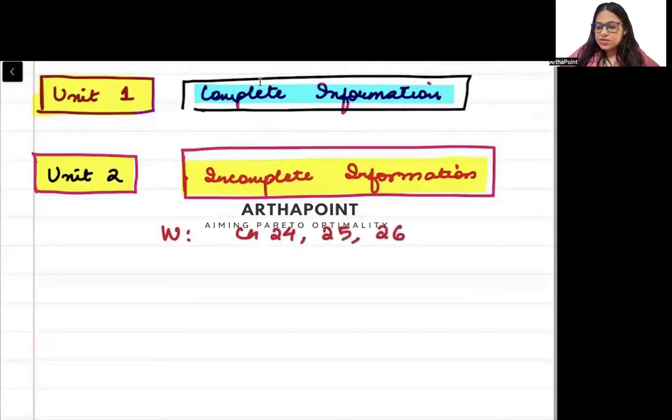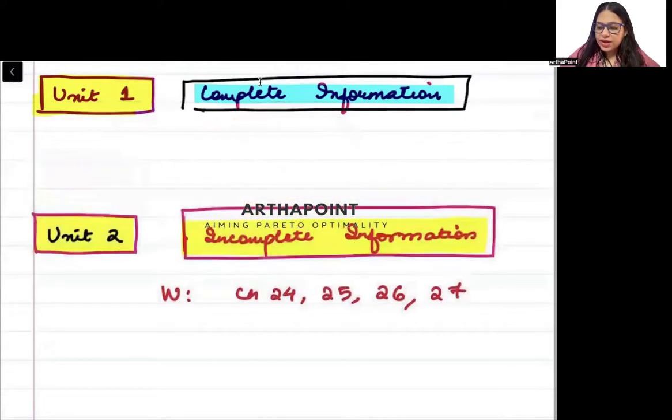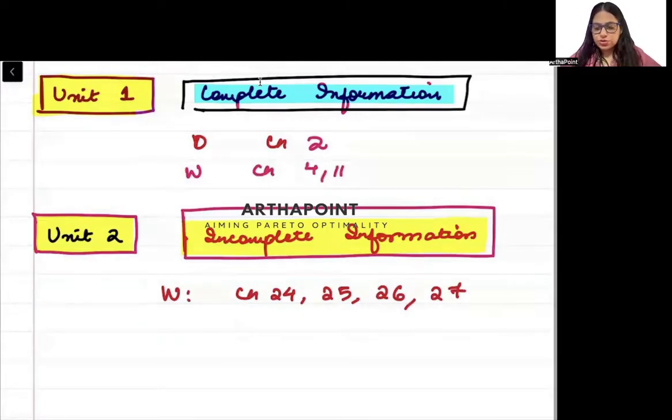And in this I will be doing Watson chapter 24, 25, 26, 27. And here in unit 1, I will be going ahead and I will be doing Osborne chapter 2 and Watson chapter 4 and 11. This is your incomplete information. My bad. This is unit number 4.